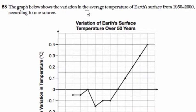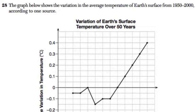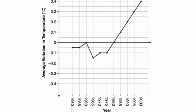The graph below shows the variation in the average temperature of the Earth's surface from 1950 to 2000, according to one source. So we have from 1950 to 2000, the average variation in temperature. You can see that in some cases it's below the average, that it is the average.